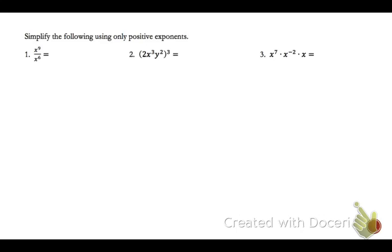So if you look at number 1, you have x to the 9th divided by x to the 6th. So you can use the quotient rule. Since your bases are the same, they both are x, you can take and subtract the exponents. Take the larger exponent minus the smaller exponent.